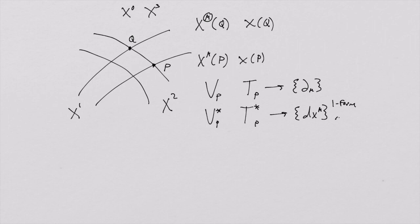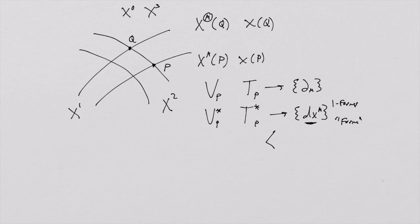The idea of a form in general relativity is something we haven't really discussed too much. These operators, these maps that take del-mu to the real numbers, or take vectors to the real numbers, happen to be called one-forms, and we'll use that language from now on. You can build two-forms, three-forms, and higher-forms from one-forms, but it's not completely obvious how to do it, and we won't discuss that for a few more lectures.